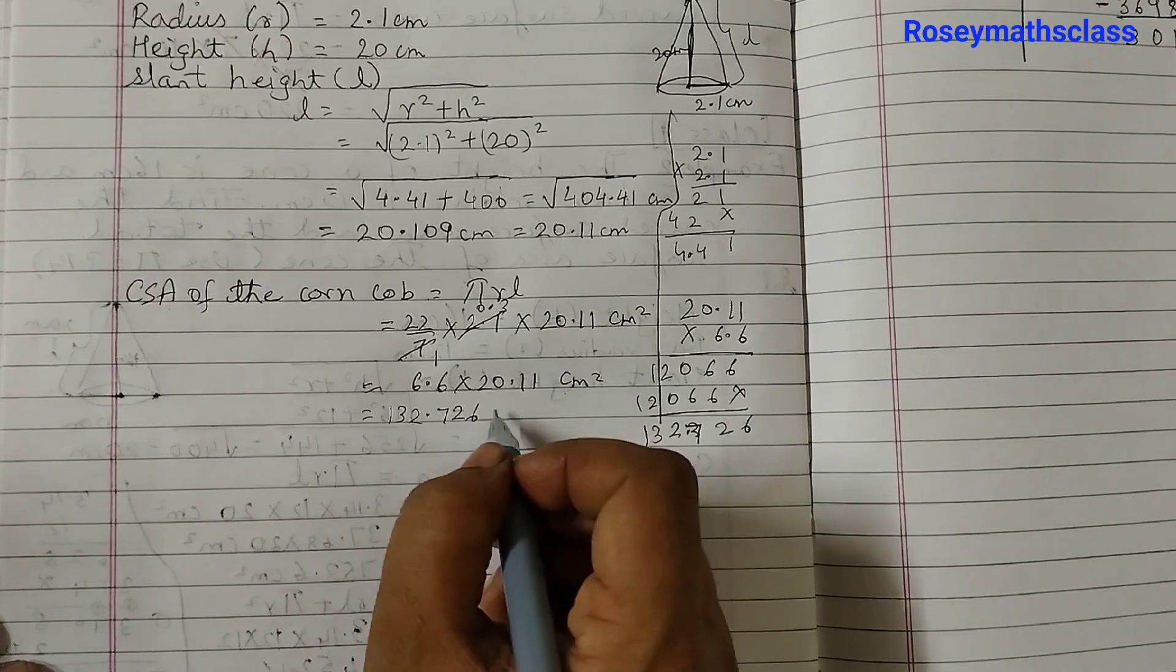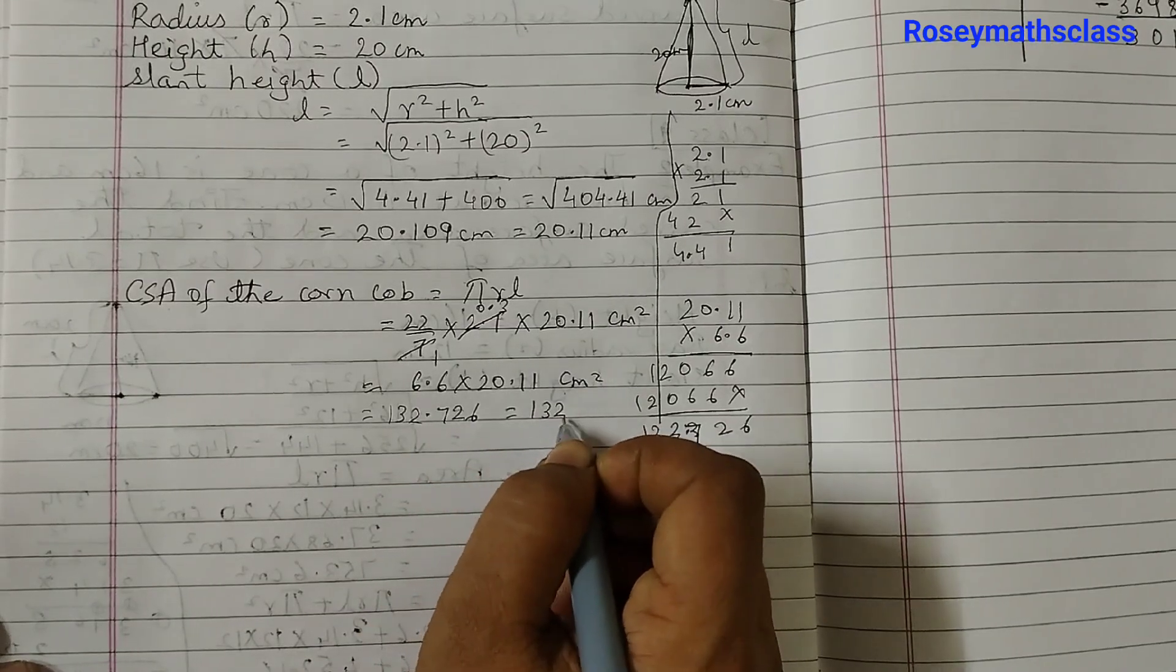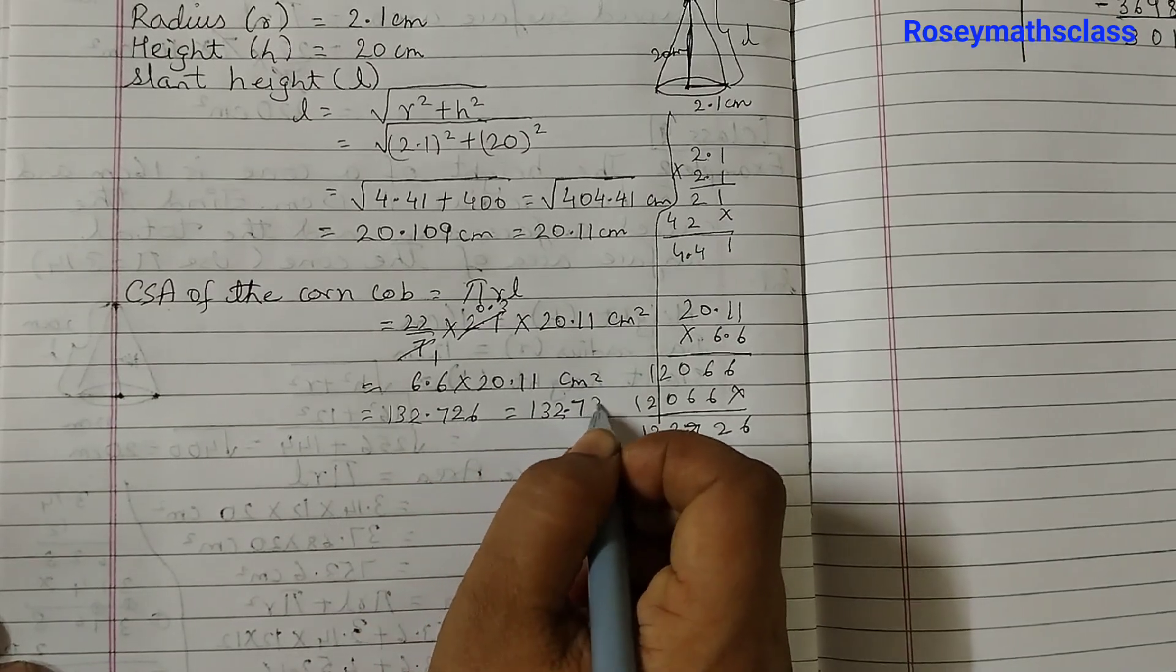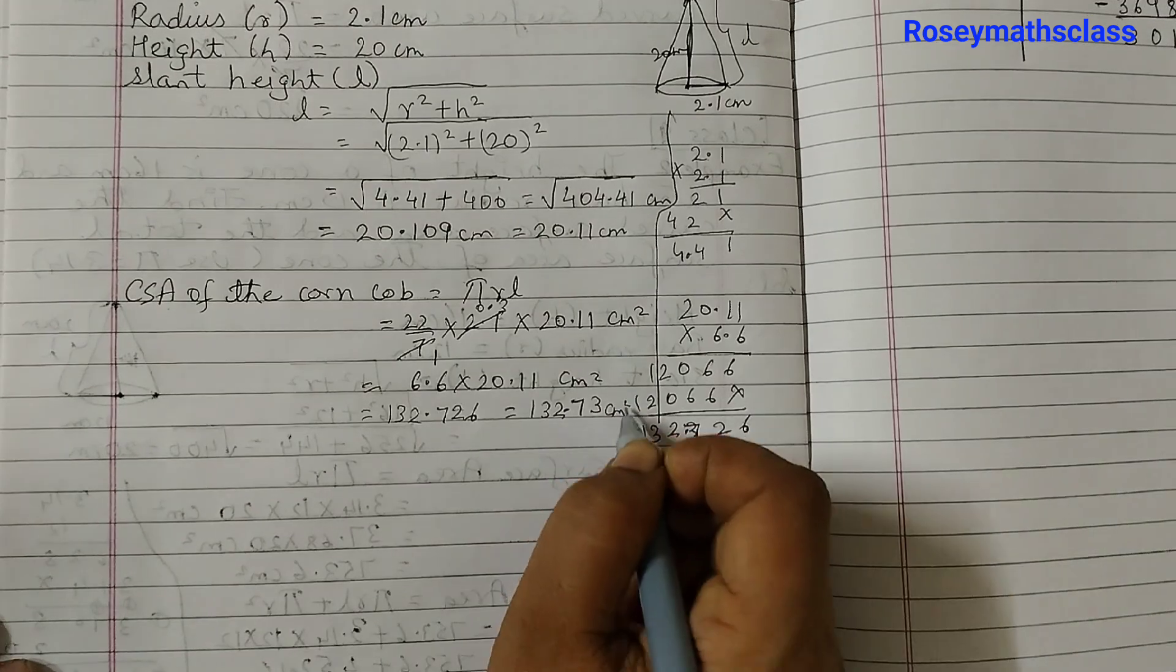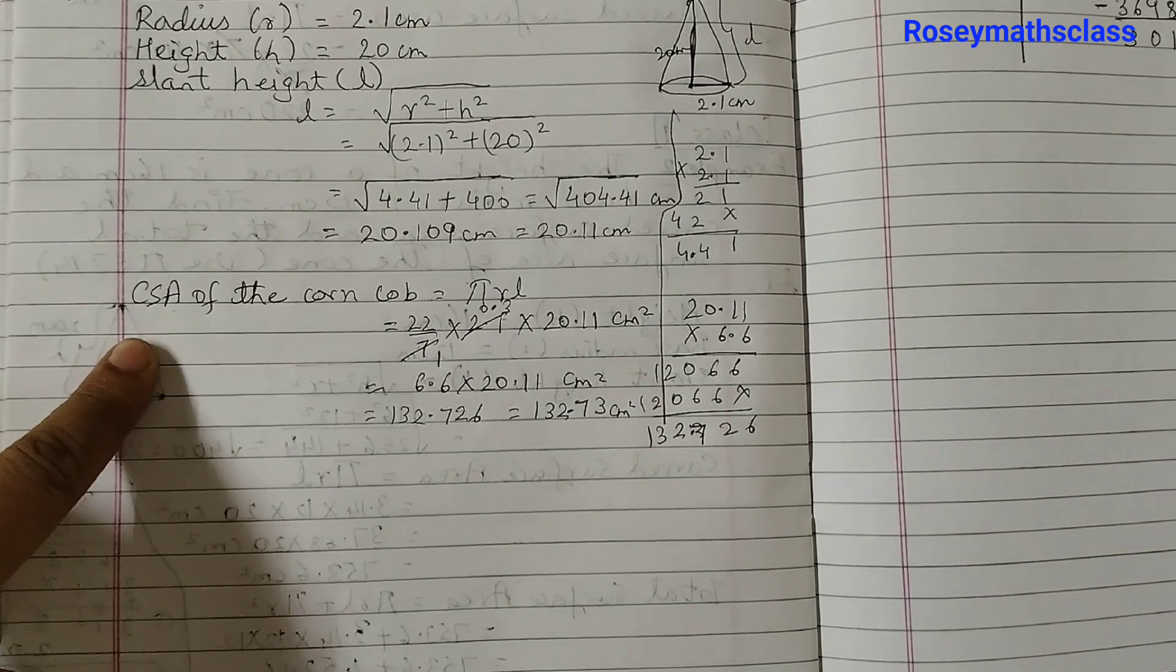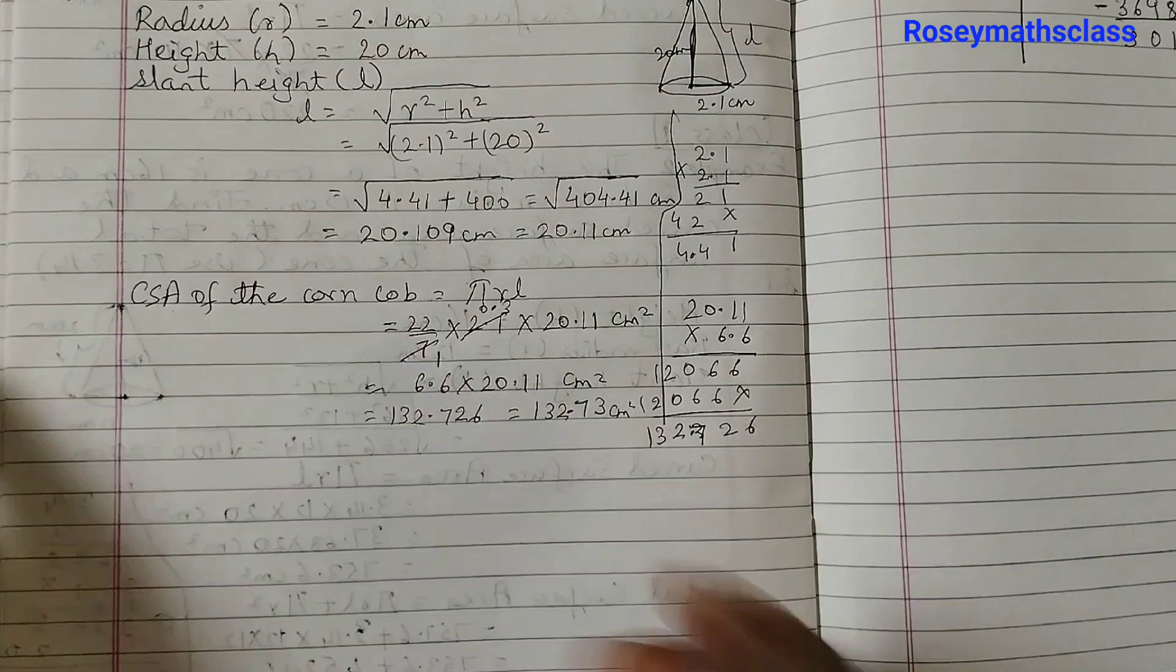After the decimal 2 places, after the decimal 1 place, so 3 in total. So that equals to 132.726 or we can round it off to 132.73 squared centimeters. So this is the curved surface area of the corn.